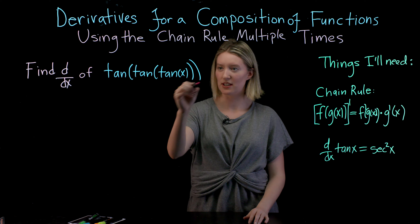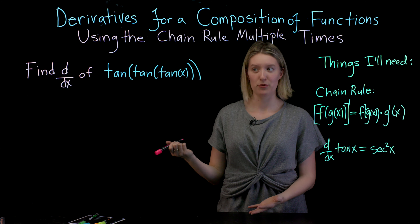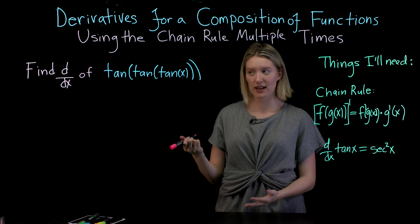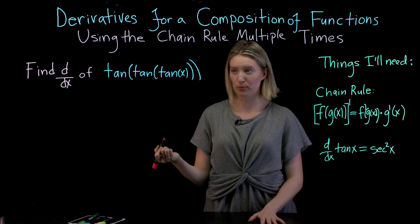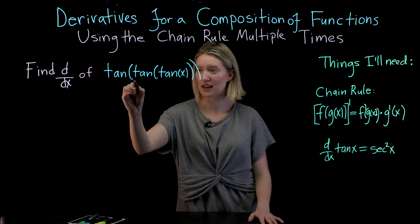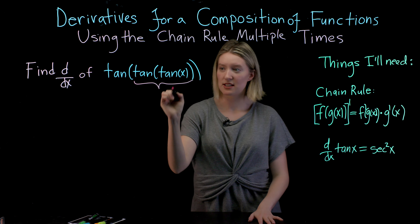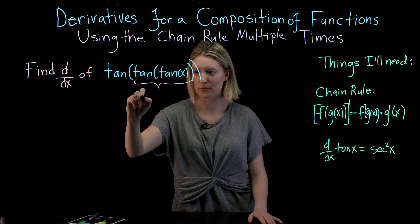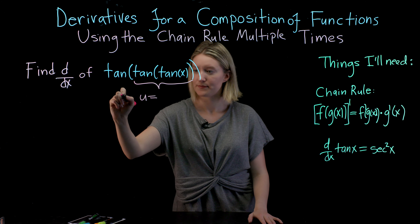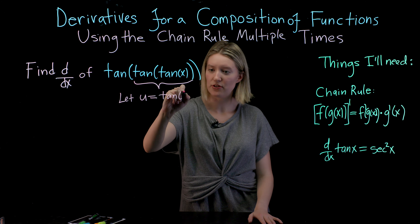I'm going to look at this function and say, well, that's a really complicated function — I don't know how to find the derivative of that. But I do know how to find the derivative of tangent of x, and that's going to dictate what I create for my first placeholder. Because I know what tangent of x is, I'm going to rewrite tangent of tangent of x as my first placeholder and say: let u equal tangent of tangent of x.